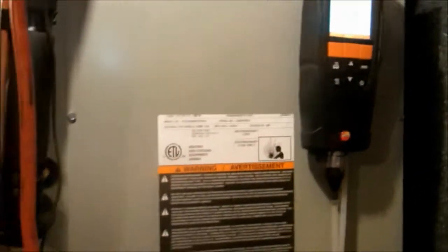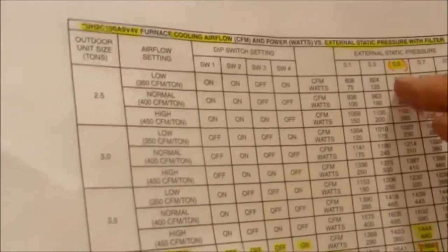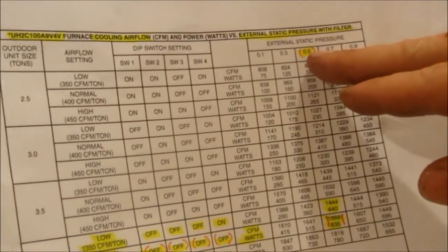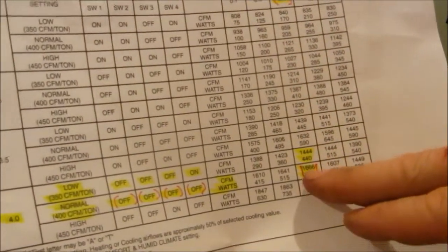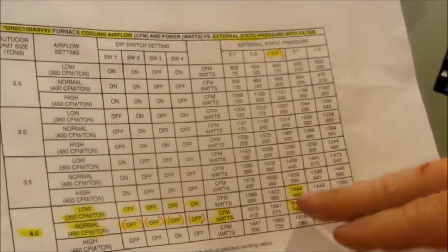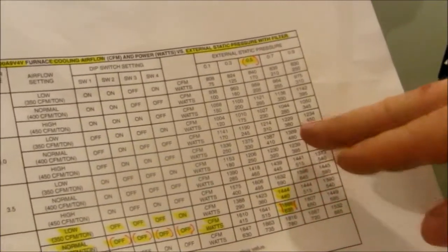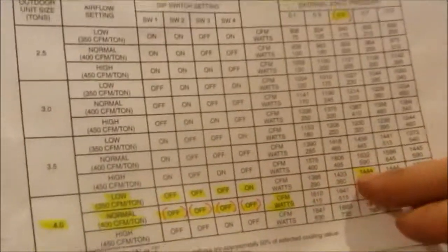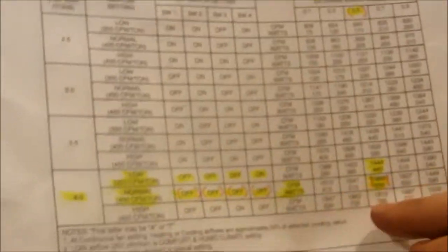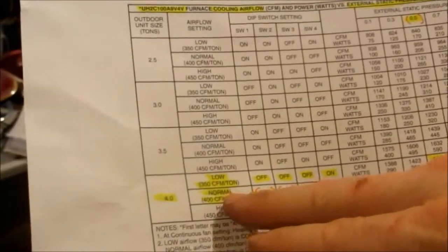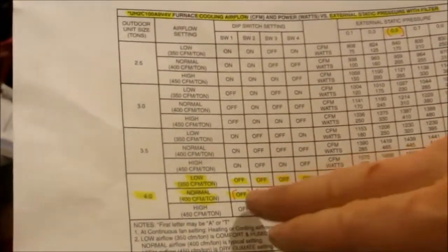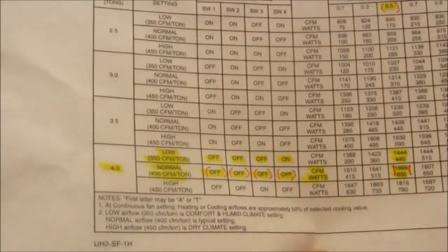Alright guys, a lot of times me and Eddie do our homework before we even come out to the job and we've actually got our static pressure chart. This shows you what your static pressure is for whatever tonnage. Ideally you want to be right around 0.5 inches of static pressure. If you come down to your four ton, that'll tell you what CFM it's moving. So for a four ton at 0.5 static pressure, we're going to be moving 1,666 CFM. Now if it were on low speed, it would be 1,444 CFM. If it was on high speed, it would be 1,800 CFM, but we're set right now on normal, which is 400 CFM per ton. You adjust them by your dip switches and we'll show you how to do that here in just a second.